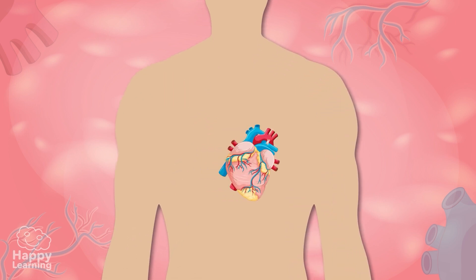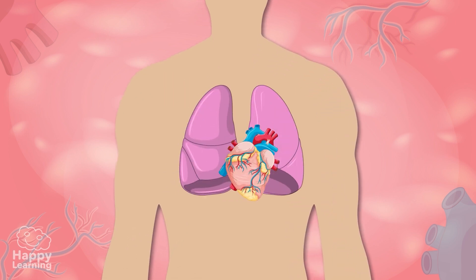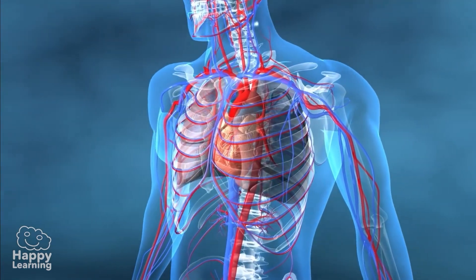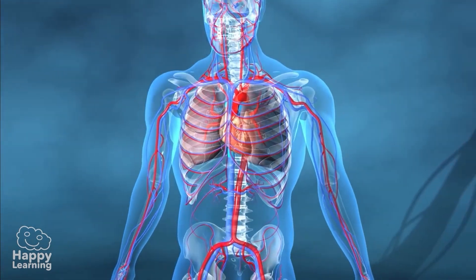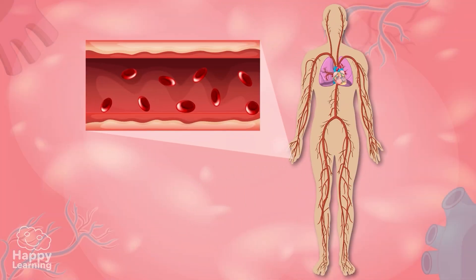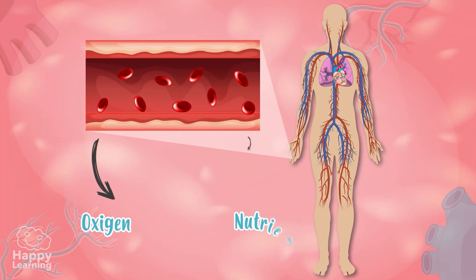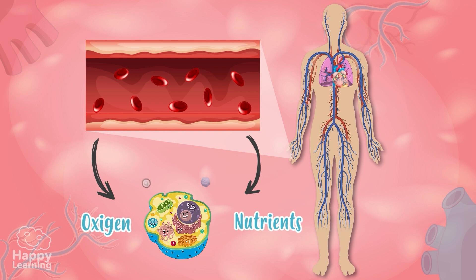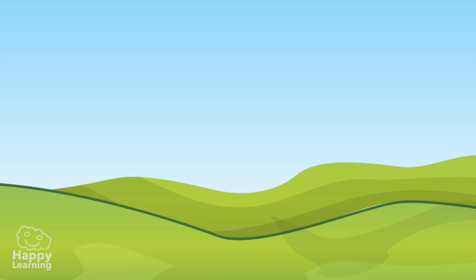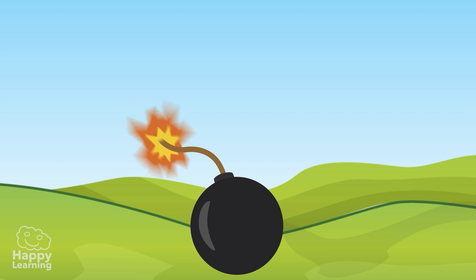The heart is situated between our lungs and is in an oblique, diagonal position. It's very special because it sends blood all over our body — blood that delivers oxygen and nutrients we need to live to all of our cells. Our heart is a type of pump.